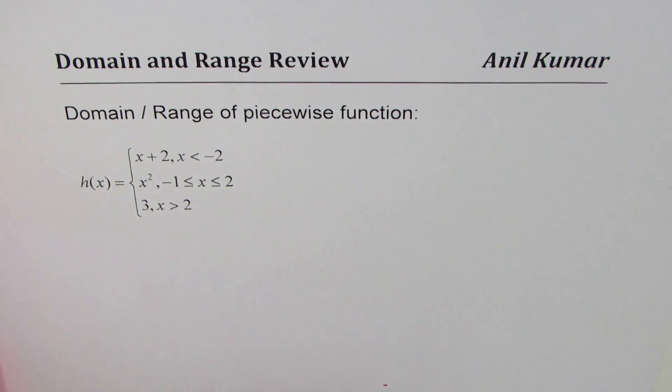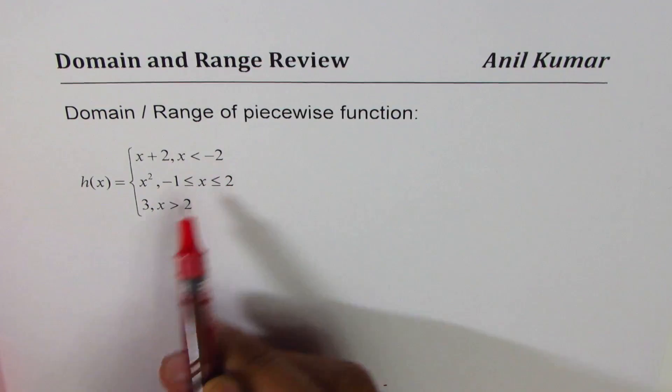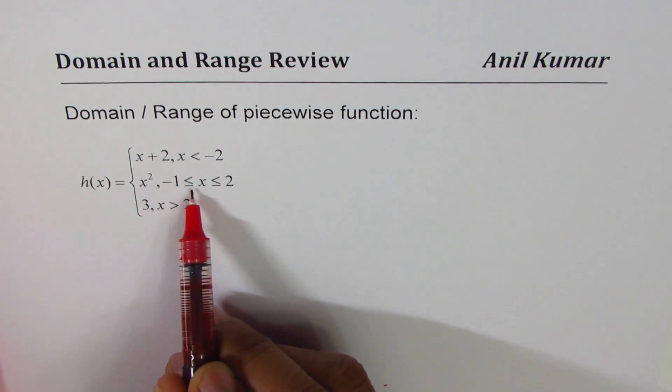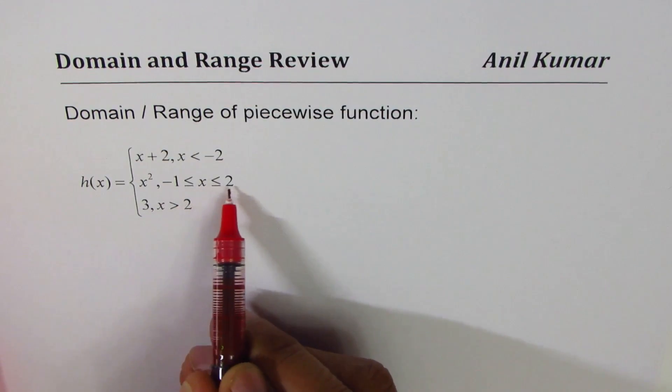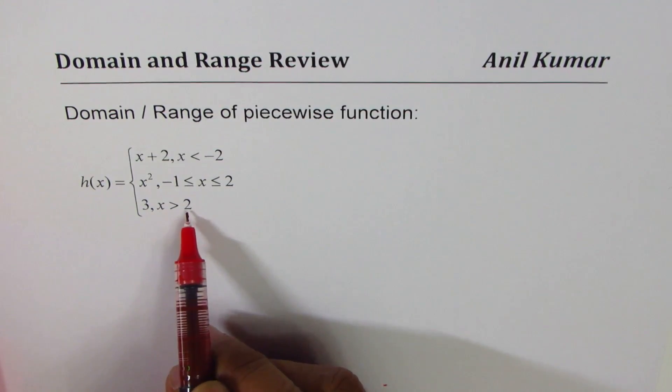Function given to us is h(x) equals x plus 2 when x is less than minus 2. It equals x squared for x greater than or equal to minus 1, less than or equal to 2. And h(x) is 3 for x greater than 2.